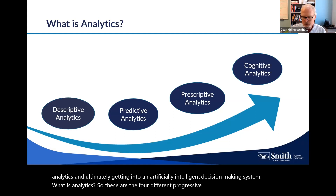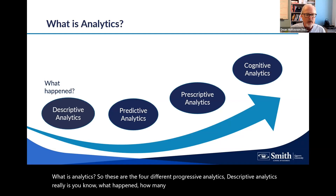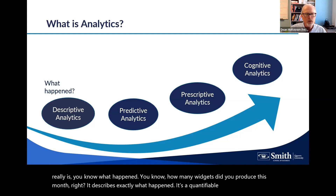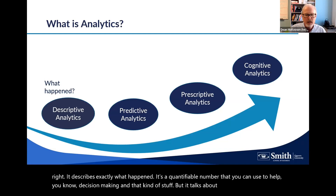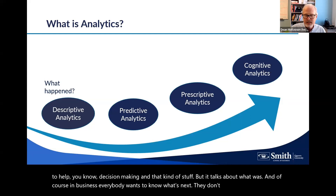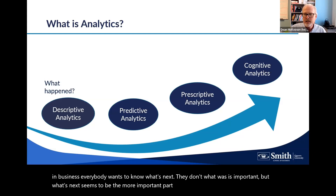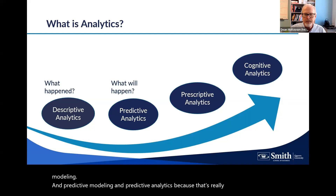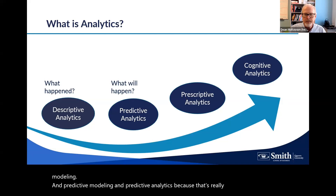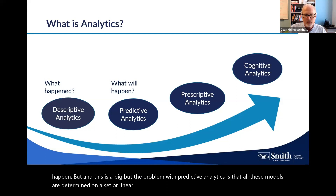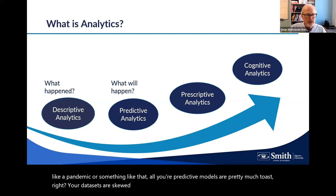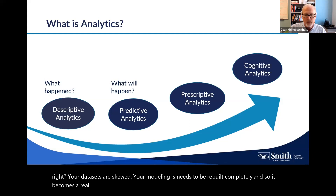The four progressive analytics types: Descriptive analytics is about what happened — how many widgets did you produce this month? It describes exactly what happened with a quantifiable number. But in business, everybody wants to know what's next, which is where predictive modeling comes in — what will happen. However, the problem with predictive analytics is that all these models are determined on a linear path forward, and as soon as you get a hiccup like a pandemic, your predictive models are essentially toast; your data sets are skewed and modeling needs to be rebuilt.